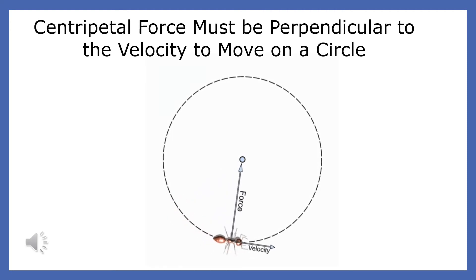The centripetal force must always be perpendicular to the velocity for an object to move in a circle.